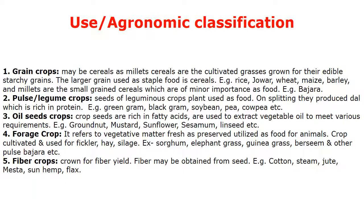Pulses or legumes may be used as smothering crops, cover crops, for consumption purposes, or for nitrogen fixation. On splitting, pulses produce dal which is rich in protein. Examples include Greengram, Blackgram, Soybean, Pea, Cowpea, etc.